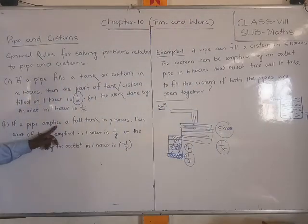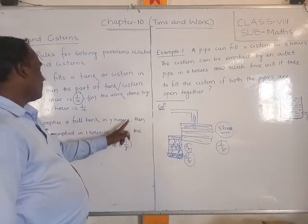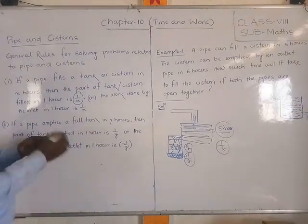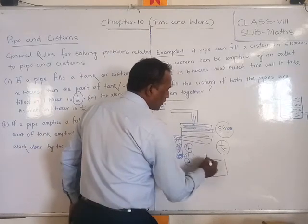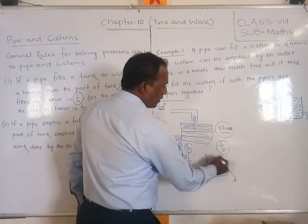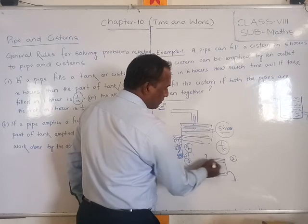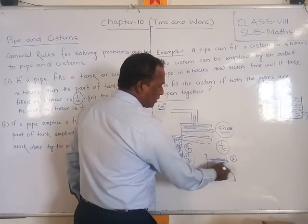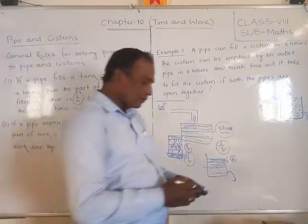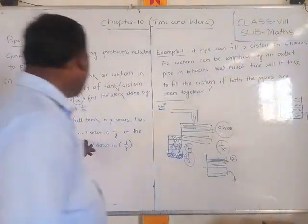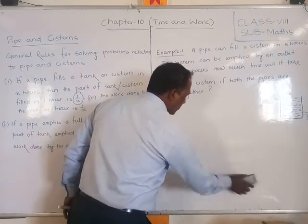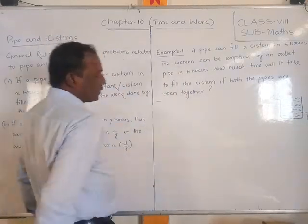Rule 2: If a pipe empties a full tank in Y hours, then the part of the tank emptied in 1 hour is 1 by Y. Suppose a full tank of water is being removed — if it takes 7 hours to completely empty it, then in 1 hour, 1 by 7 parts will be emptied. So similarly, if Y hours are taken, then 1 by Y parts will be emptied per hour.